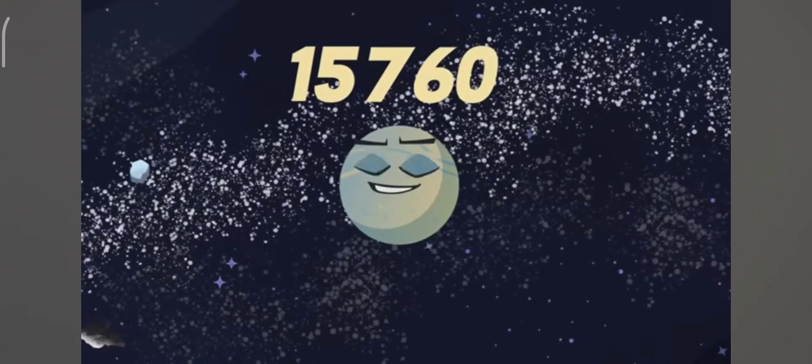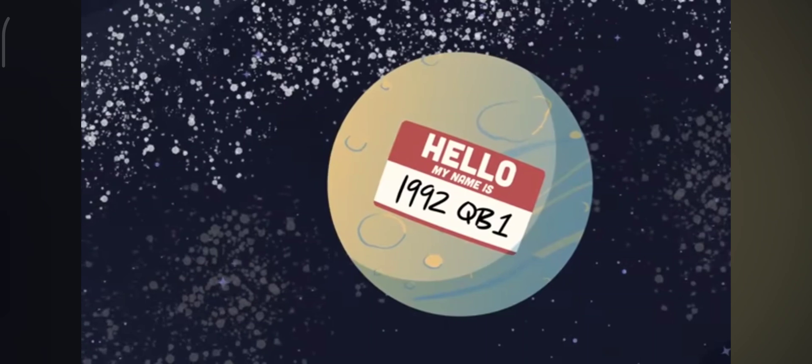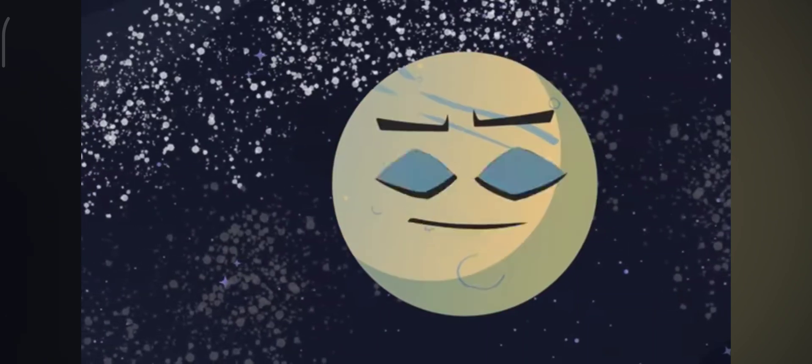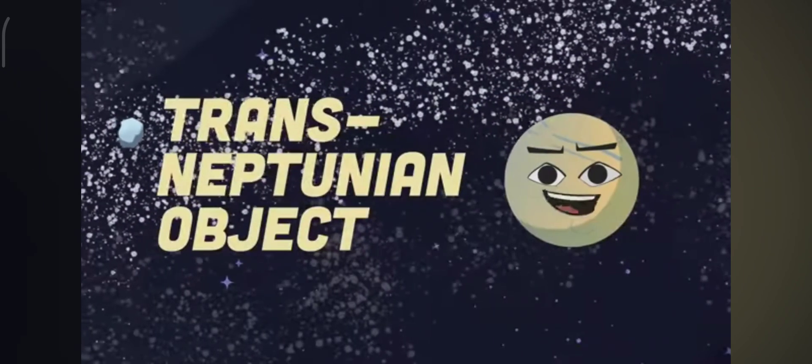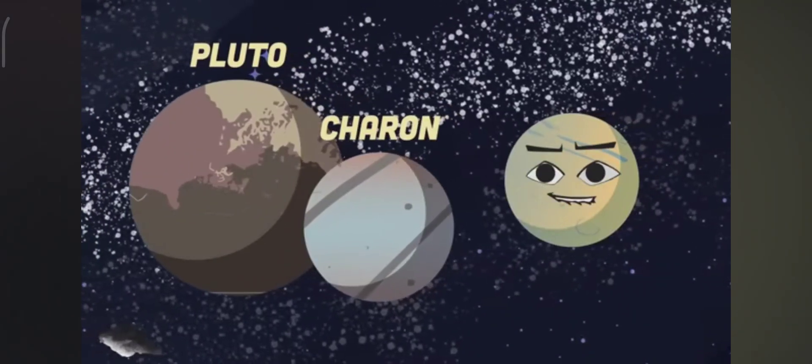I'm 15760 Albion, provisionally designated 1992 QB1. I'm the first trans-Neptunian object discovered after Pluto and Charon. I was uncovered.